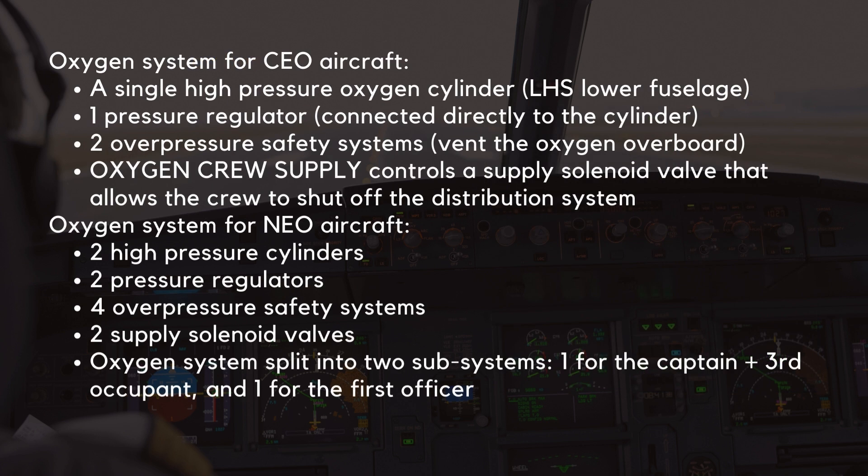The flight deck oxygen system for CEO aircraft consists of a single high-pressure oxygen cylinder located on the left-hand side of the lower fuselage, with one pressure regulator connected directly to the cylinder that delivers oxygen. Two overpressure safety systems vent the oxygen overboard through a safety port if the pressure becomes too high.